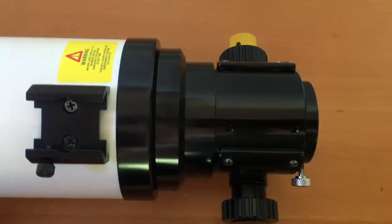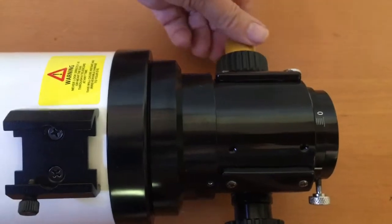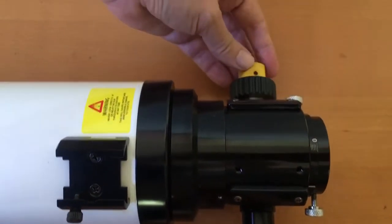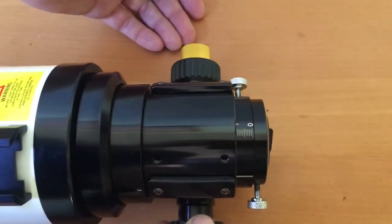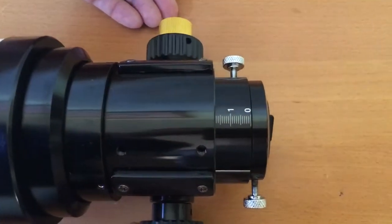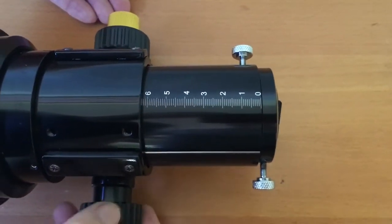And this one here is your classic two to one fine focuser. Over here, you can just see how little that moves, right, versus moving this one here. So you can just see how that is quite nice.